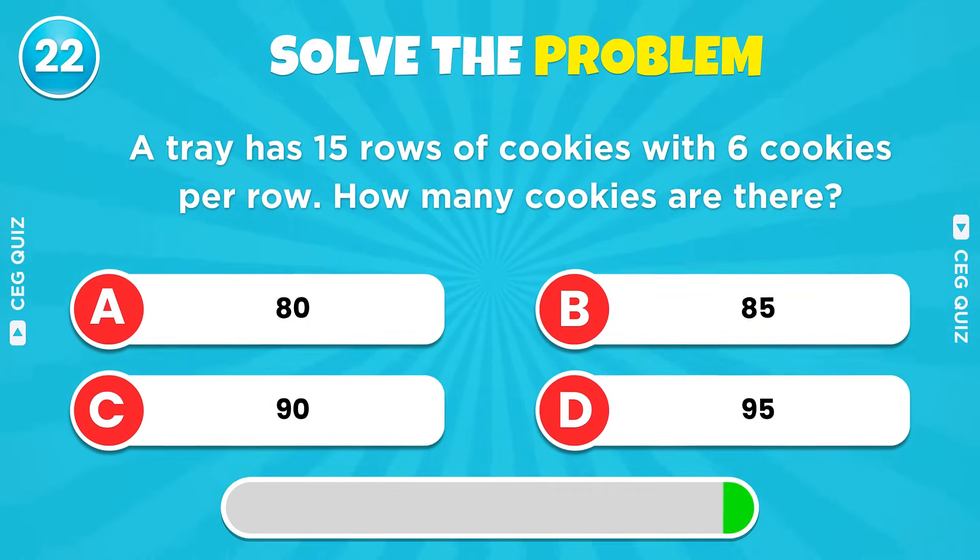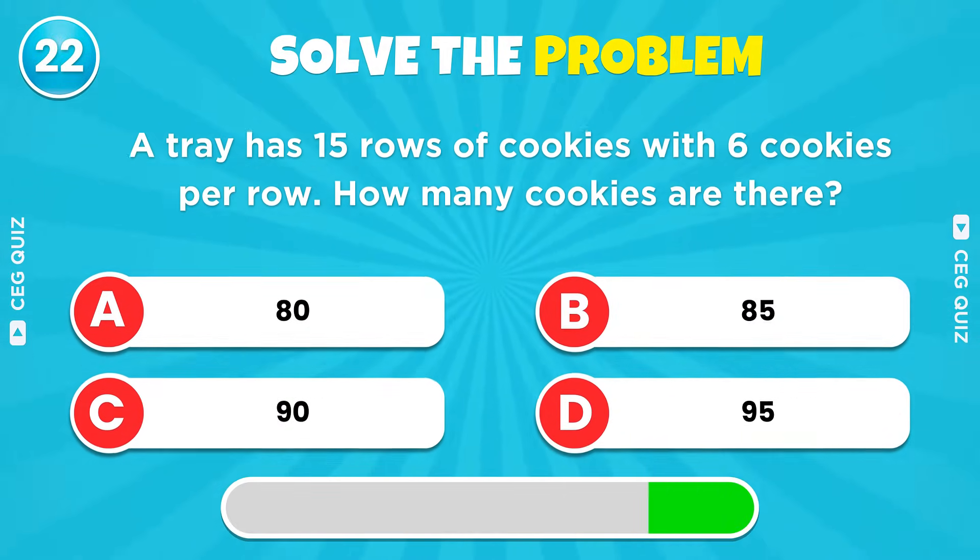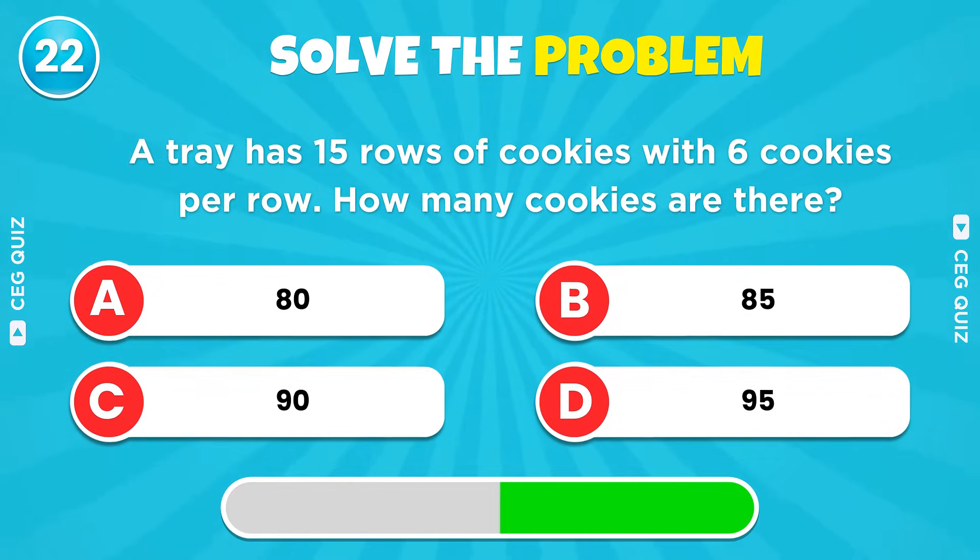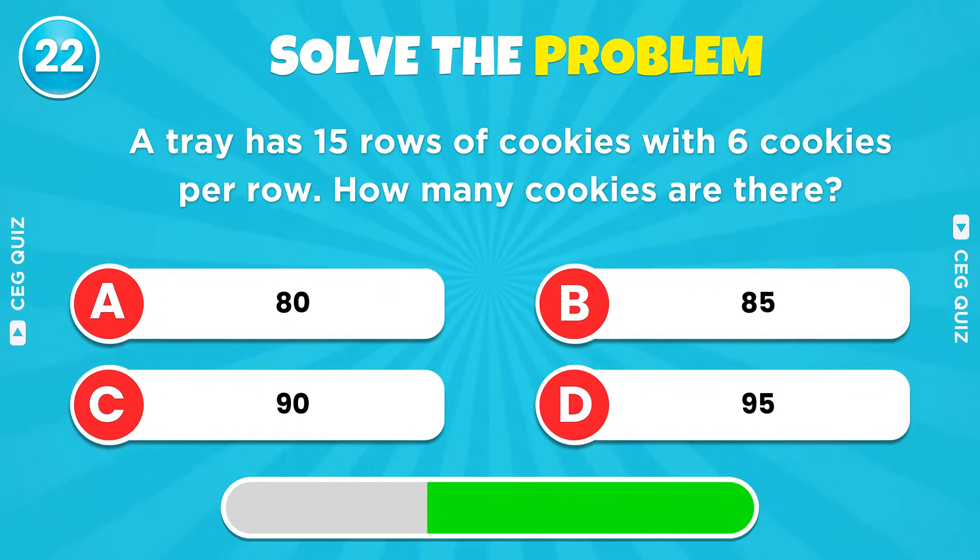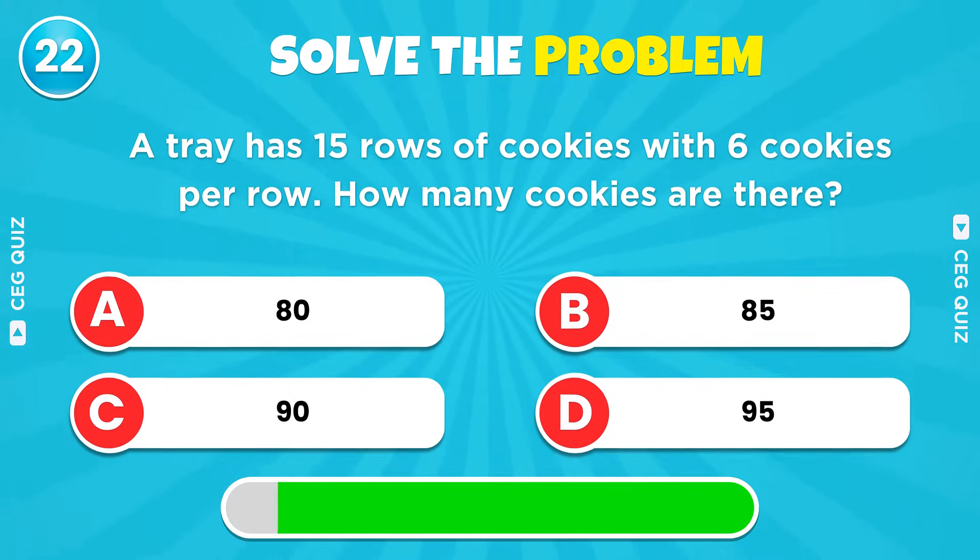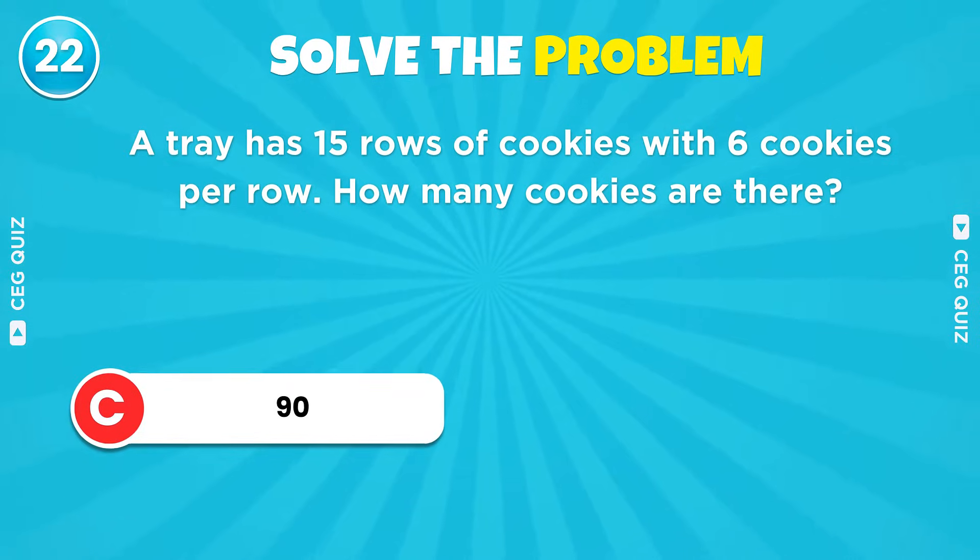A tray has 15 rows of cookies with six cookies per row. How many cookies are there? 90 cookies.